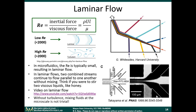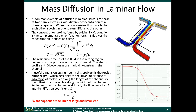One example of using laminar flow, from Shu Takayama's group at the University of Michigan, shows patterning different labeling reagents into a channel. If a cell is downstream, you can treat parts of the cell with different labeling agents. You can get very fine chemical gradients using laminar flows — by chemical gradient, I mean differences in chemical concentration, such as having a large concentration of a chemical on one side and zero on the other.